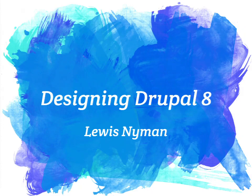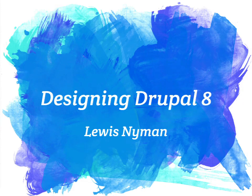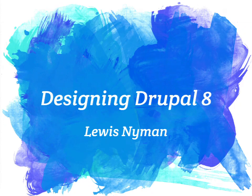I'm the maintainer of the Seven theme in Drupal — the admin theme that ships when you install Drupal. And last week I became the maintainer for all the CSS in Drupal. When I accepted the maintainer position and the commit was made, after that I thought maybe I should check and see what I'm getting myself into. So I had a look, and there are actually 145 CSS files in Drupal 8 and about 13,836 lines — quite a lot.